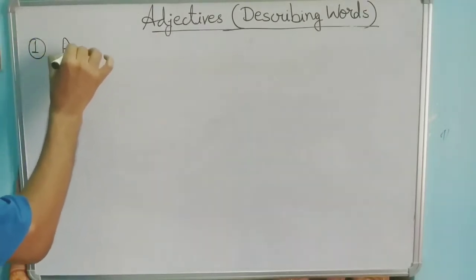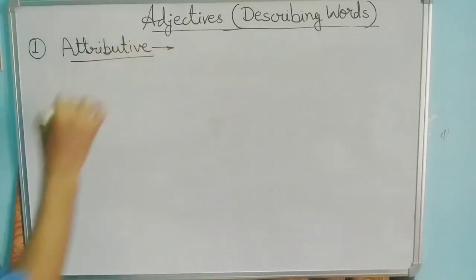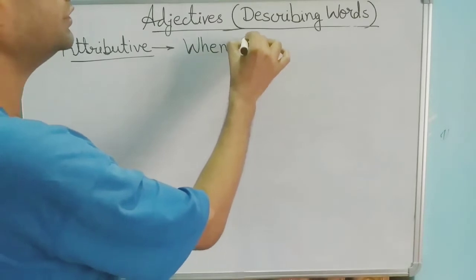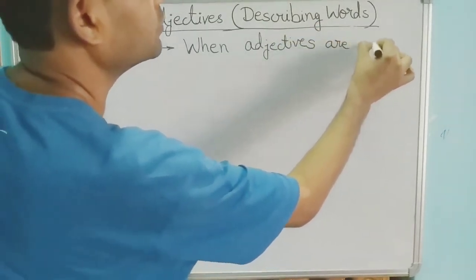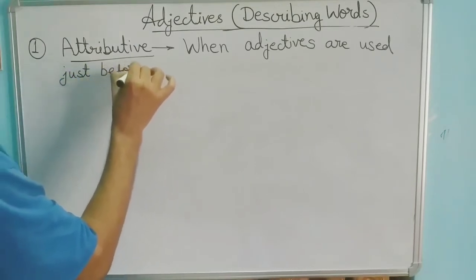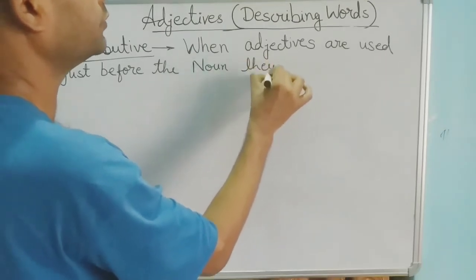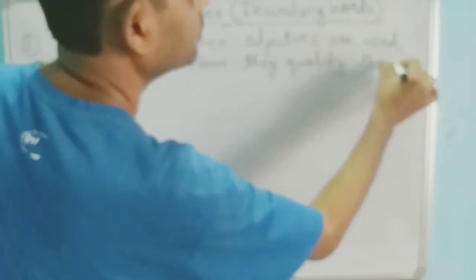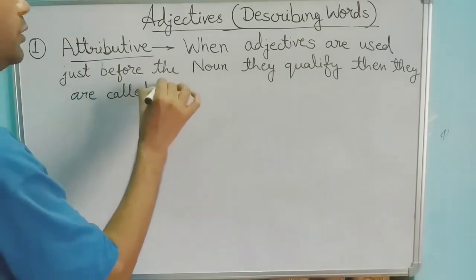When an adjective is used just before the noun it qualifies, then it is called an Attributive adjective.